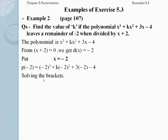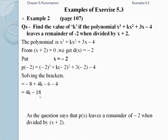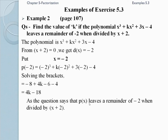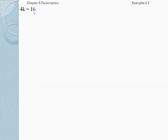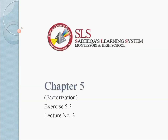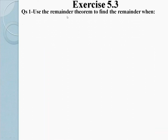Solving the brackets: -8 + 4k - 6 - 4 = 4k - 18. As the question says P(x) leaves a remainder of -2 when divided by x + 2, so 4k - 18 = -2. Therefore 4k = -2 + 18 = 16, dividing by 4 gives k = 4 as the required answer. Now we will do exercise 5.3, question number 1.